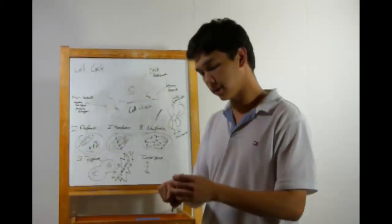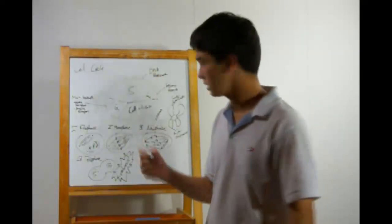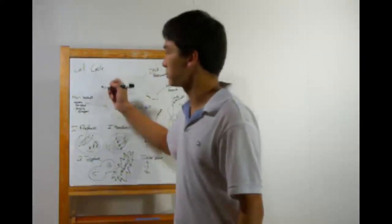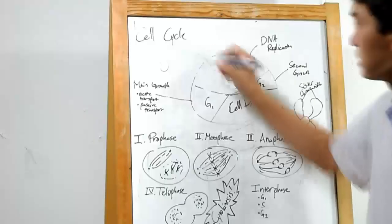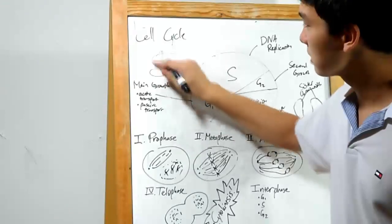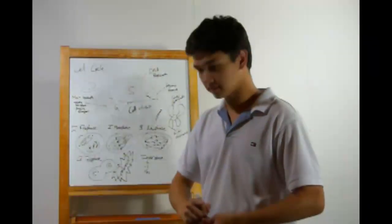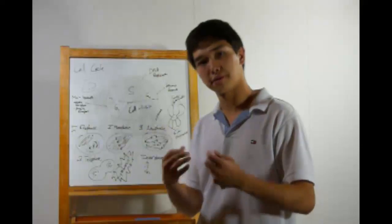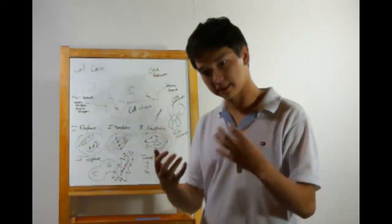The other two types of active transport are phagocytosis and pinocytosis. Let's say this is the object we want to bring inside the cell. In phagocytosis, the cell will wrap itself around the object and ultimately glom over it. That's phagocytosis for physical objects, something that is a solid.